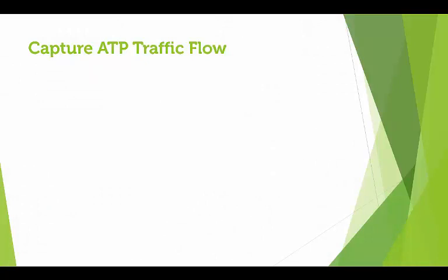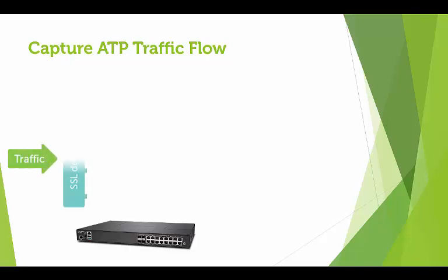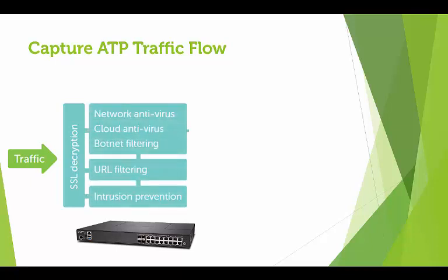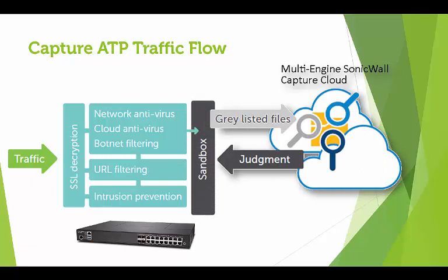So we covered what Capture is. Let's look at the way a file flows through the SonicWall. Traffic enters the SonicWall and if you have DPI-SSL in production — which I'm confident you will — it's decrypted. The packets are scanned against existing security services. Everything stopped up to this point has been known as bad or allowed as good. Files in the gray area, or unknown files, are then sent up to the Capture Cloud for analysis and judgment.